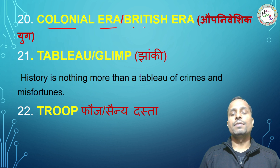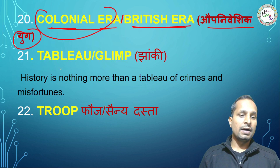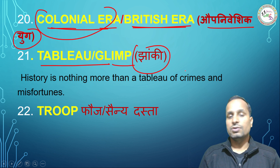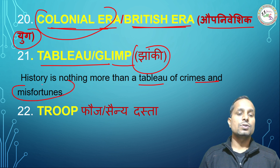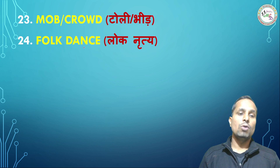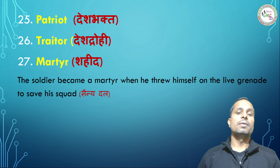'Colonial era' or 'British era' — अंग्रेजों का युग। Next is 'Tableau' or 'Glimpse' — झांकी। History is nothing more than a tableau of crimes and misfortunes. 'Troop' means फ़ौज या सैनिक दल. 'Mob' or 'crowd' means टोली या भीड़। 'Folk dance' means लोक नृत्य।